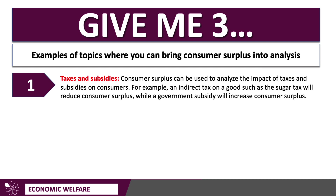First of all, taxes and subsidies. Whenever you get a question on tax and subsidy, you can use consumer surplus to add to your analysis. For example, an indirect tax on a product such as the sugar tax or even a carbon tax will tend, other things being the same, to increase prices and reduce consumer surplus. While a government subsidy is the opposite of a tax, and if it's a subsidy to producers, that tends to lower prices and increase consumer surplus.